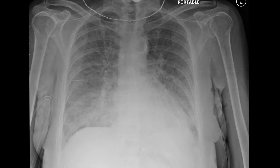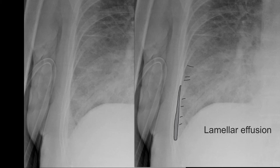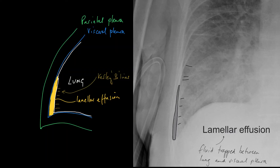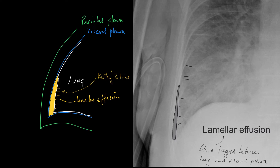Here is another case of a patient who has both interstitial and alveolar pulmonary oedema. If you notice in the right costophrenic angle, there is a linear density which parallels the chest wall. This is due to fluid collecting between the visceral pleura and the lung, so it's not truly a pleural effusion because it's not in the pleural space. It is trapped between the lung, bordered by the white line, and the visceral pleura, bordered by the blue line — it's in the potential space between the lung and the visceral pleura. Now, once you see a lamellar effusion with curly B lines, the diagnosis is virtually always going to be heart failure. So it's actually quite a powerful sign.